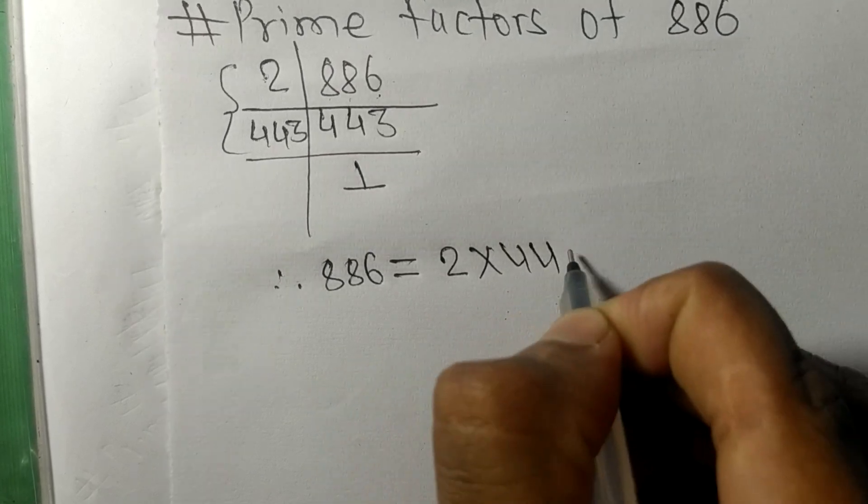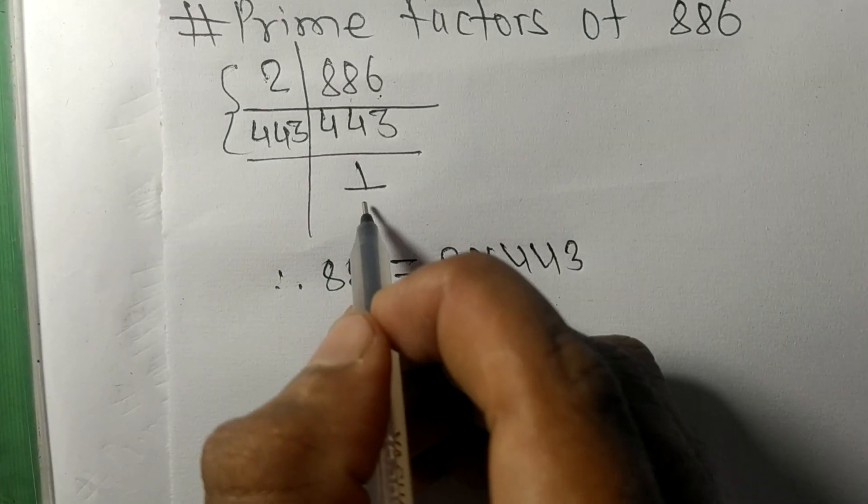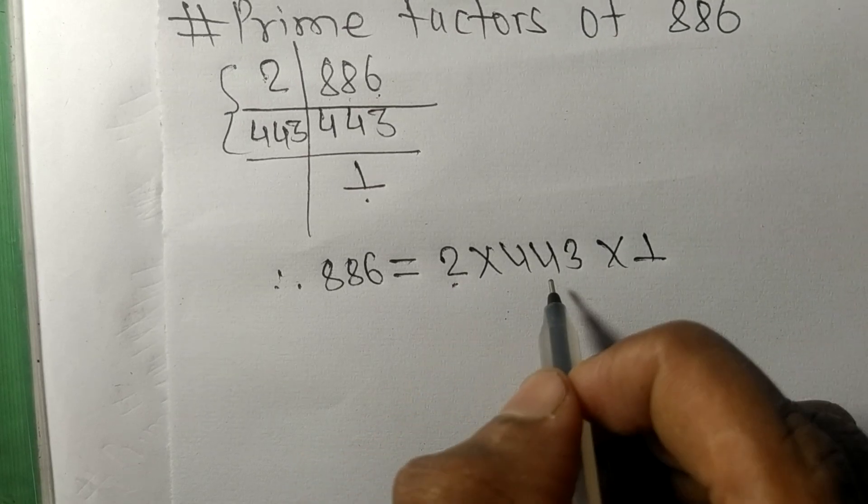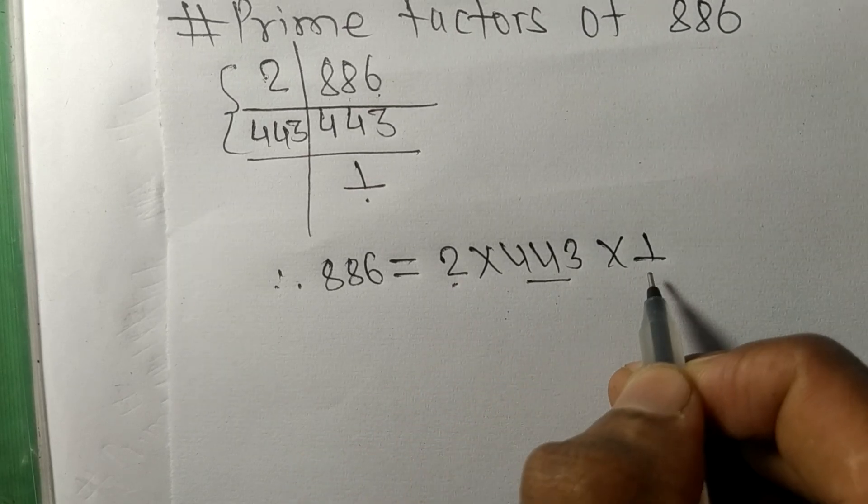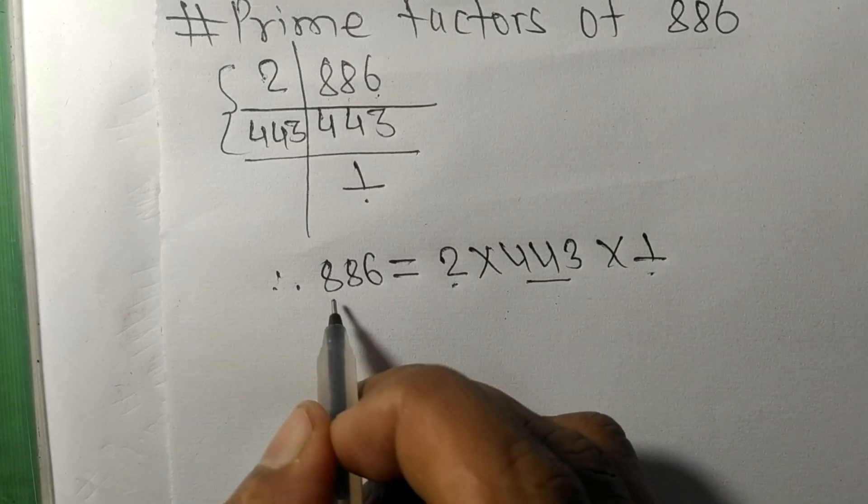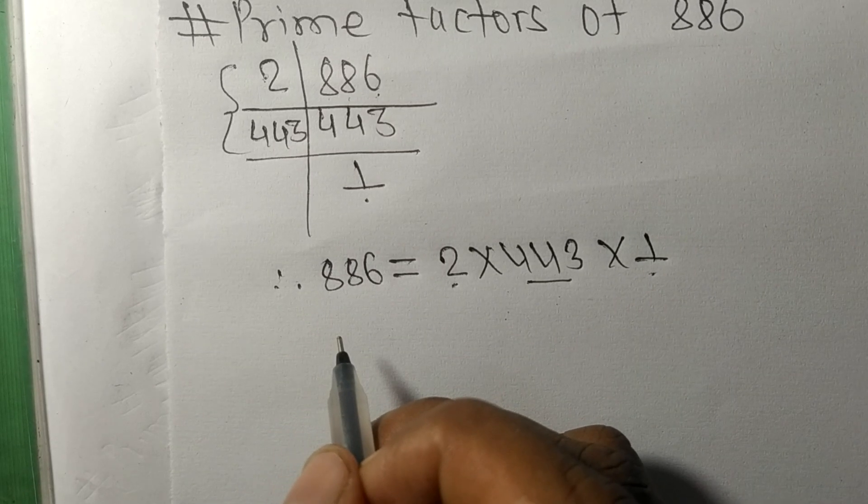times 443. From here it is 1, so 2, 443, and 1 are the prime factors of 886.